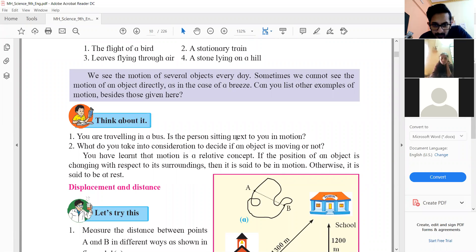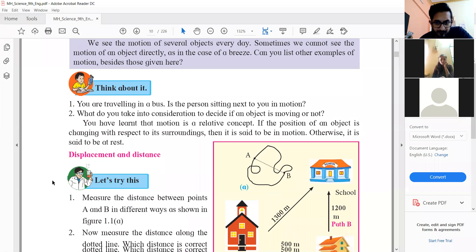So what do you take in consideration to decide if an object is moving or not? We know that motion is a relative concept. It depends on where you are and where you are looking at it. It depends on the position of an object is changing with respect to its surrounding. It is said to be in motion. If it is moving in motion, it is in rest.